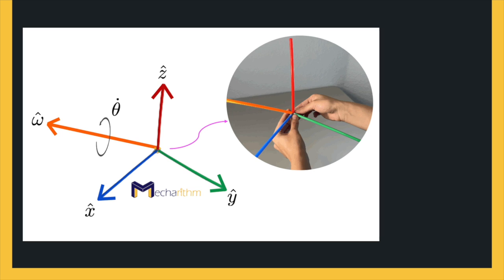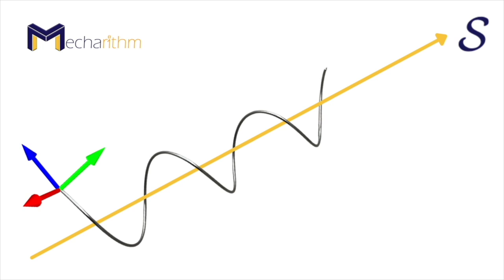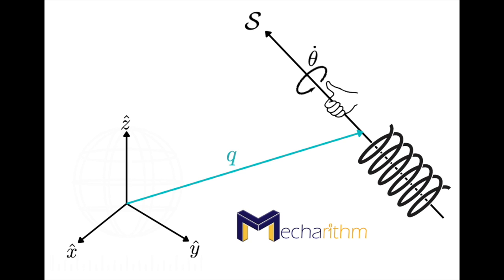In the velocities in robotics lesson, we learned that the angular velocity omega could be represented by a unit axis omega-hat and the rate of rotation theta-dot about this axis. Similarly, we can express a twist as an angular component and a linear component as a screw axis S and the rate theta-dot about the screw axis. Any rigid body velocity has a linear component and an angular component equivalent to the instantaneous velocity about some screw axis.